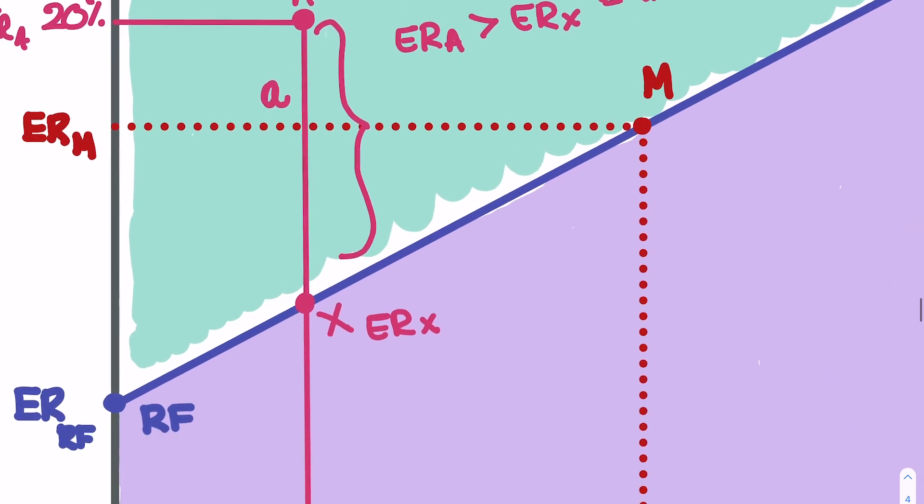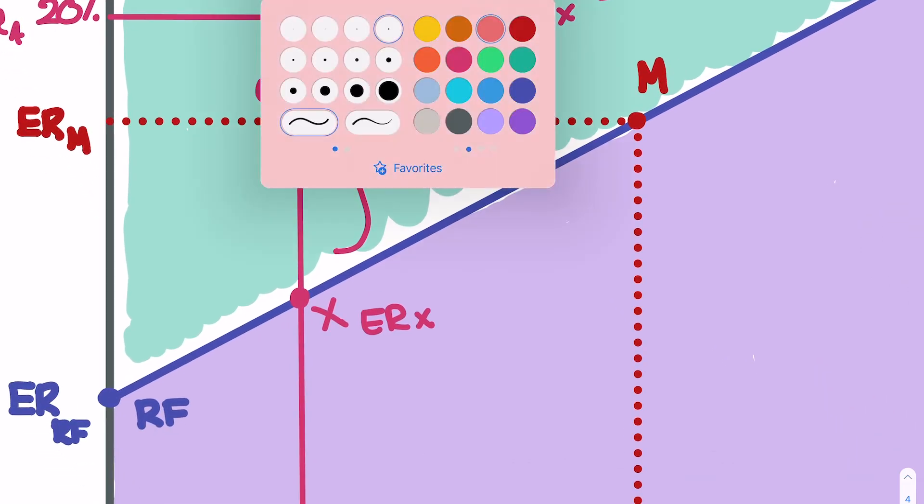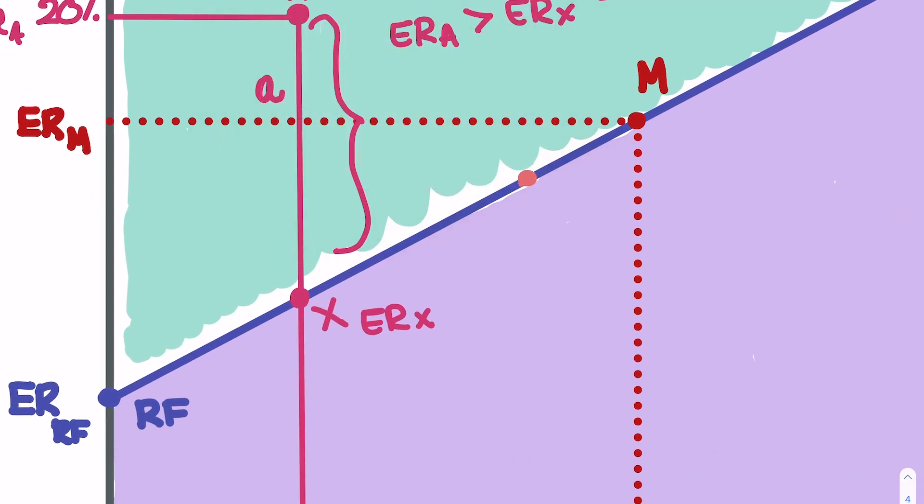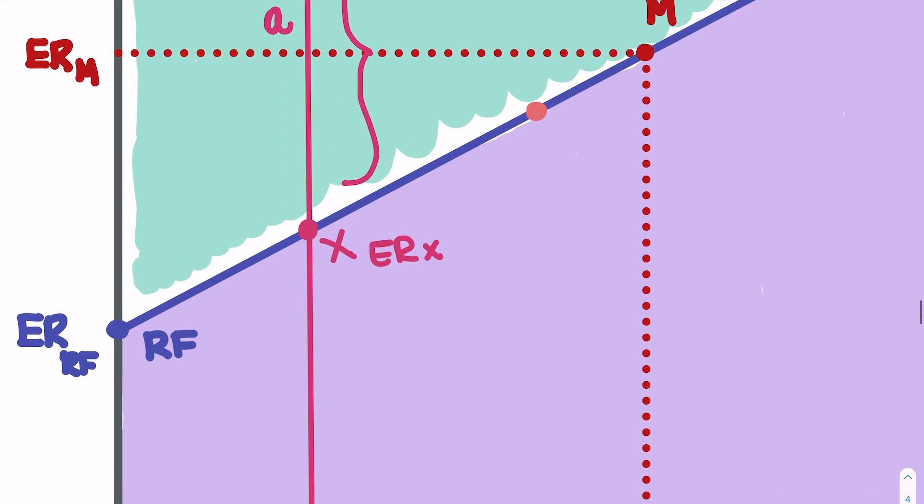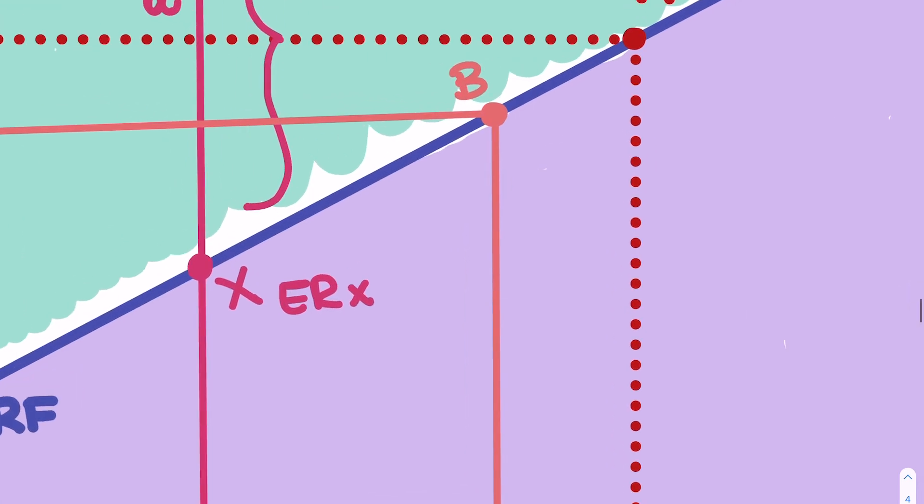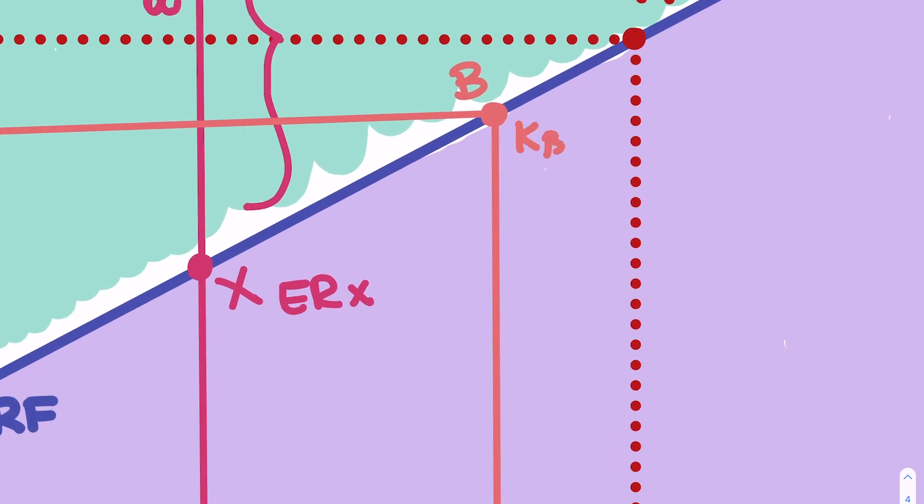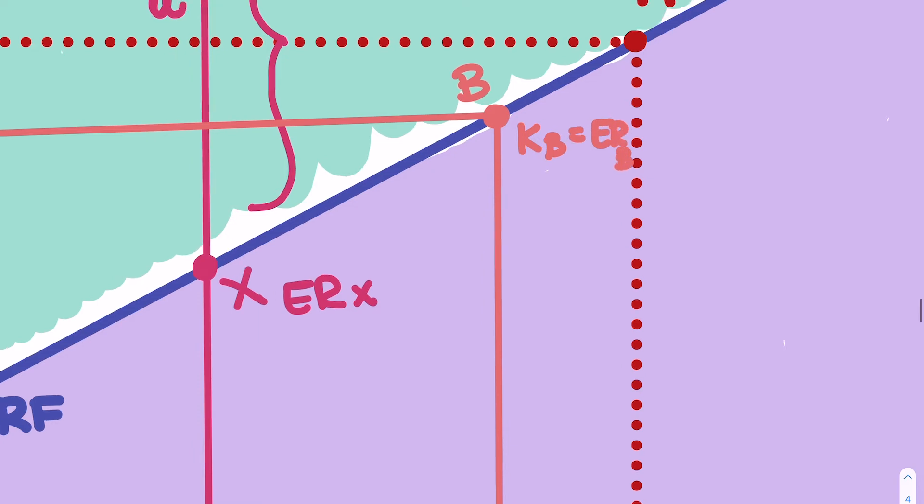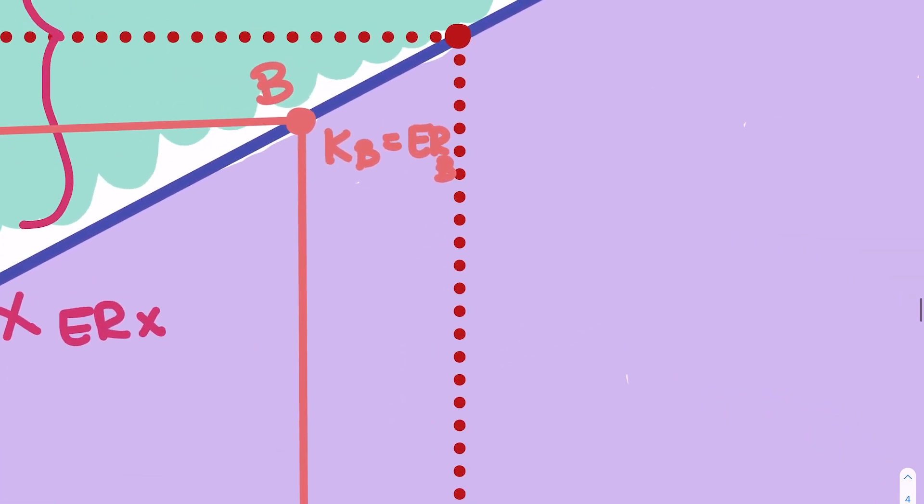But conversely, let us look at a different point. Let's look at a point at which, for example, right here. This is our point. We're going to call it point B. And it lies directly on our SML. So that would mean that regardless of whatever math we do, whatever we have as our K will be equal to our ERB.